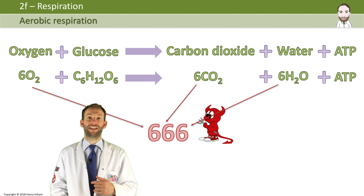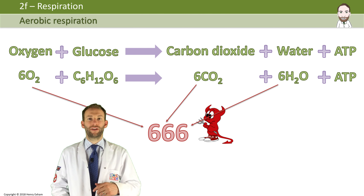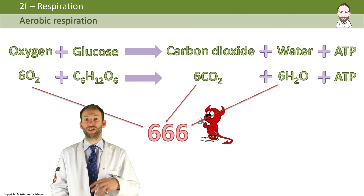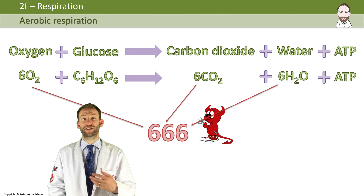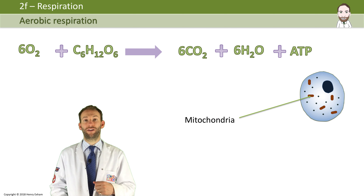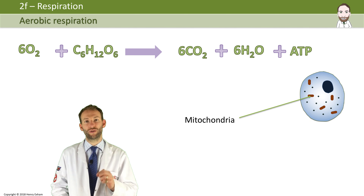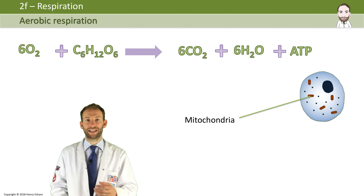Aerobic respiration produces lots and lots of energy for the cell in the form of ATP, and it happens inside the mitochondria — the little organelles inside the cell.